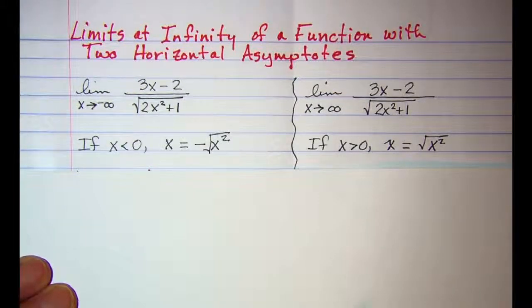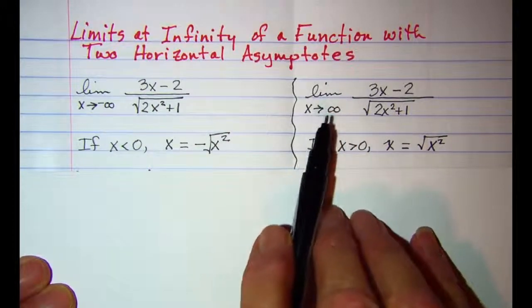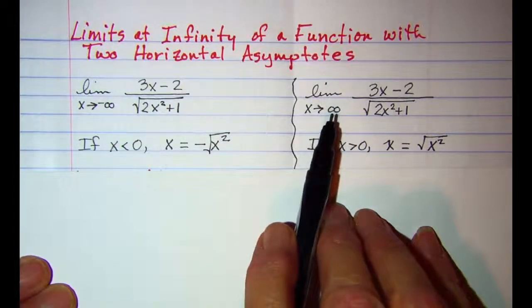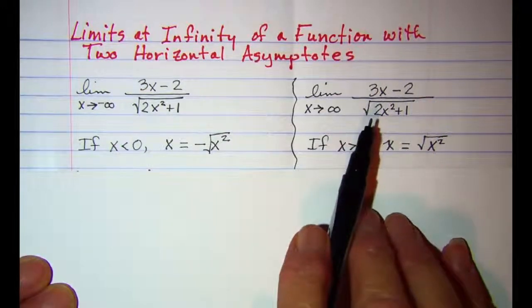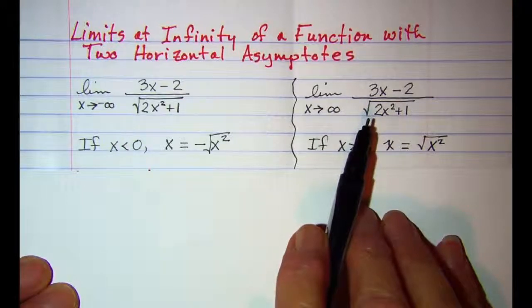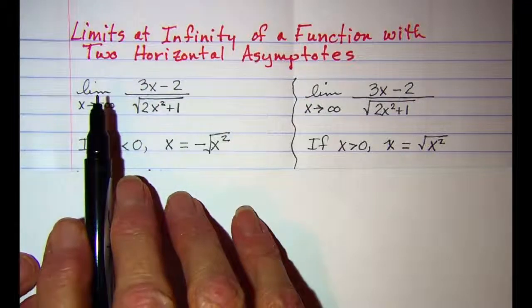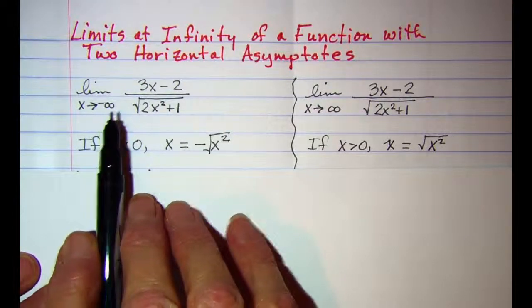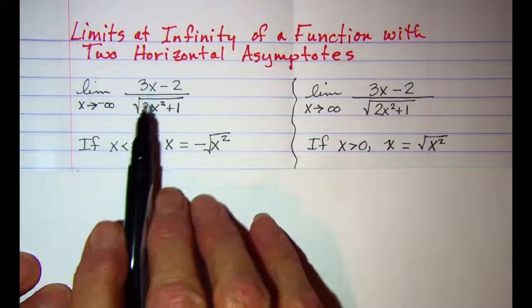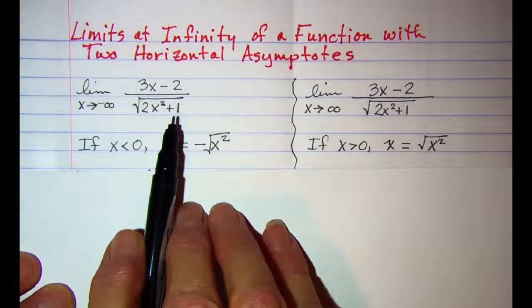In this video we'll be finding limits at infinity of a function that has two horizontal asymptotes. We'll need to consider the limit as x approaches positive infinity and the limit as x approaches negative infinity for the function f(x) = (3x - 2) divided by the square root of (2x² + 1).